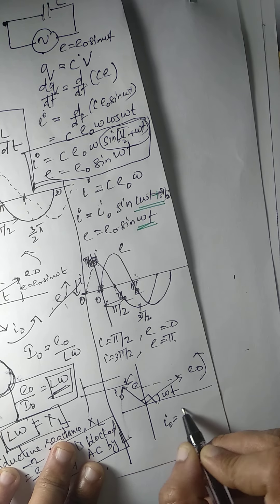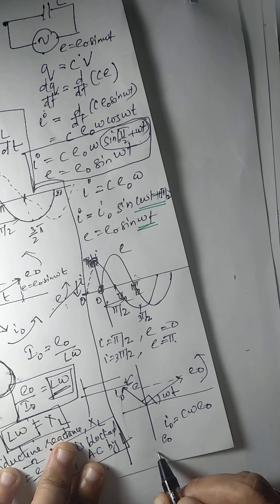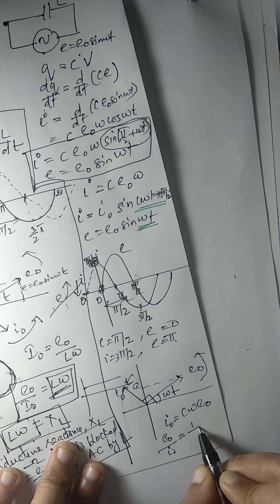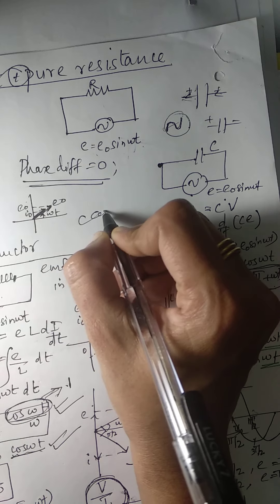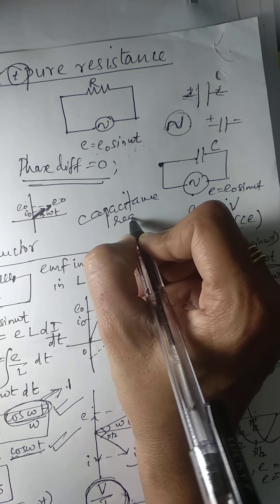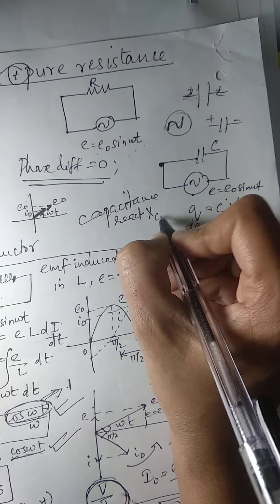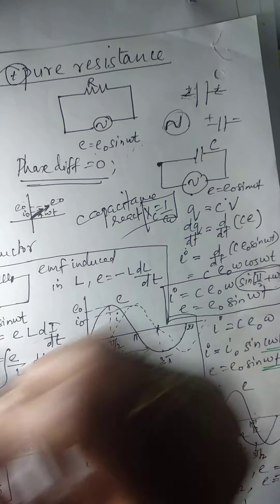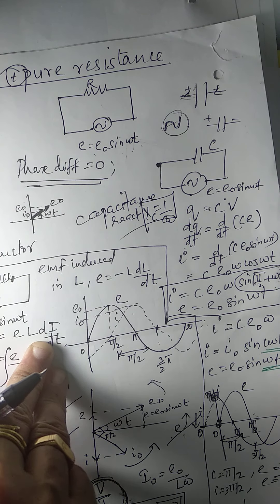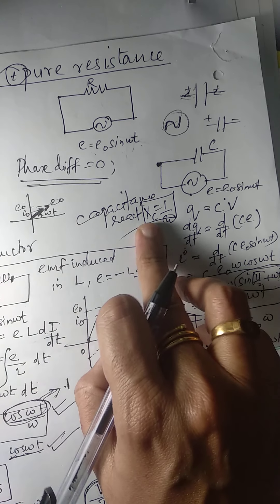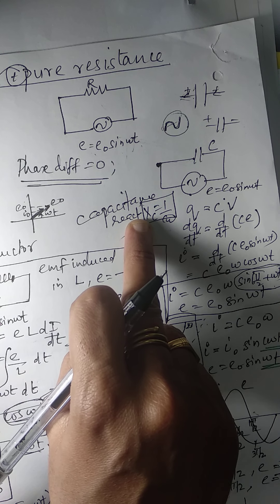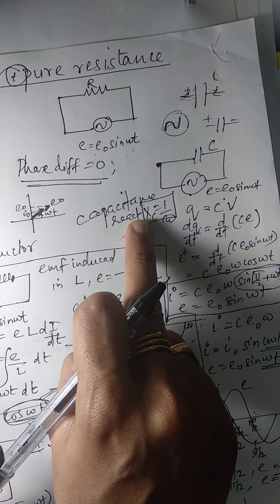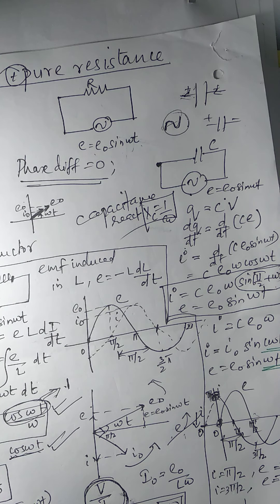I₀ = CE₀ω. Any opposition to current is V/I, so here it is 1/(Cω). We call this capacitive reactance, XC = 1/(Cω). If ω is large, XC will be very small. If ω is very small, XC is large. If DC is applied, ω = 0, so XC is infinity.